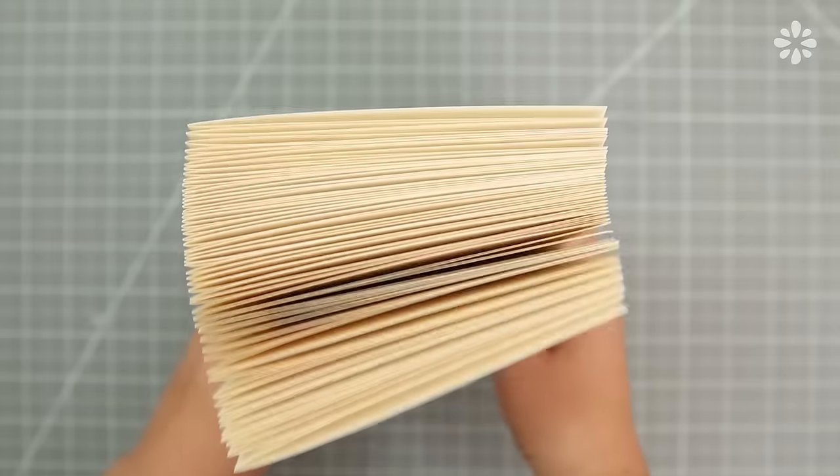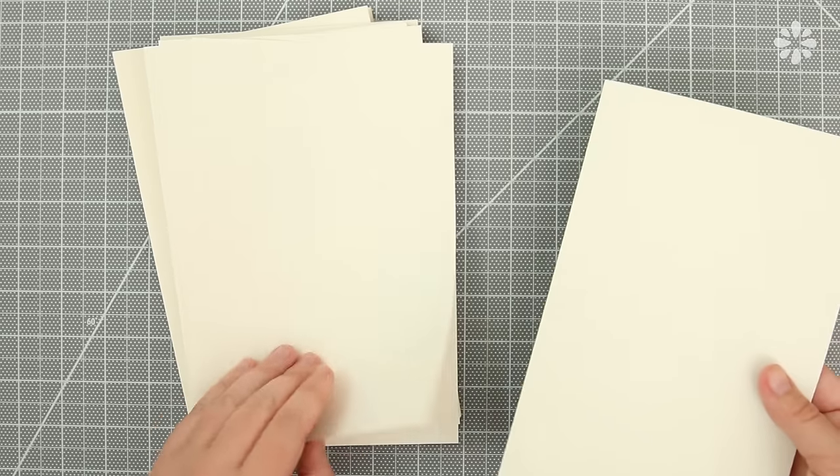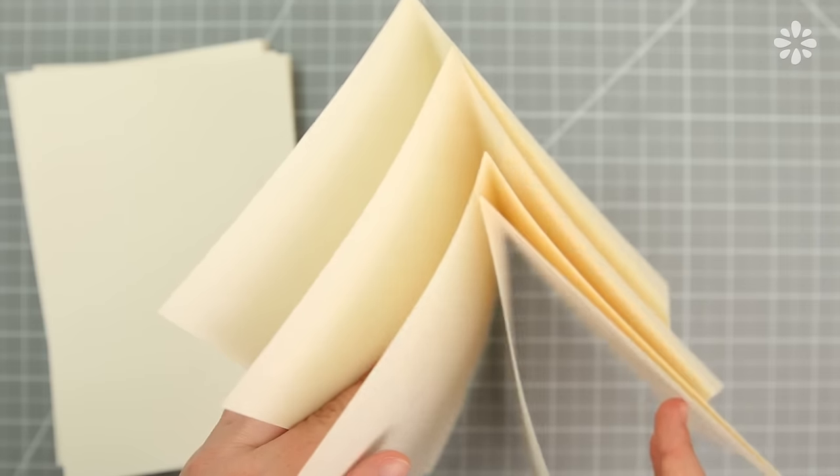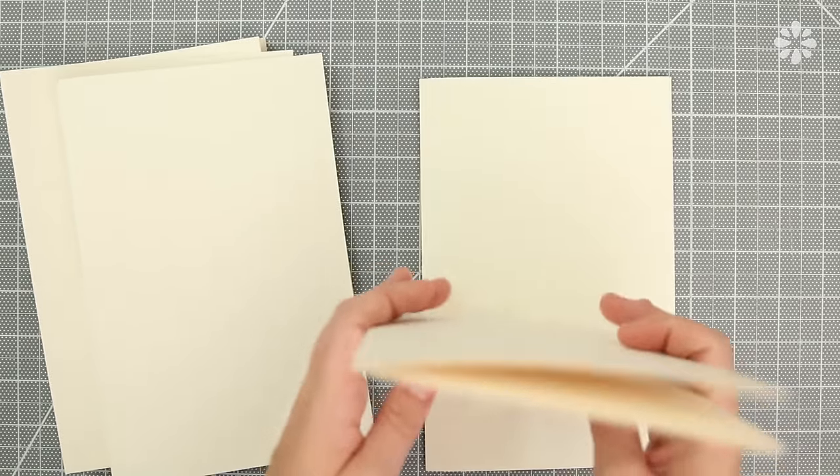Now with all the sheets folded in half, you're going to stack them in groups of four to make signatures. So four sheets stacked look like this, and 52 sheets will give me 13 signatures total.